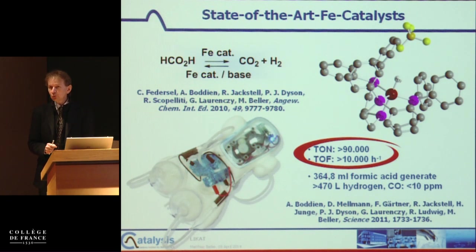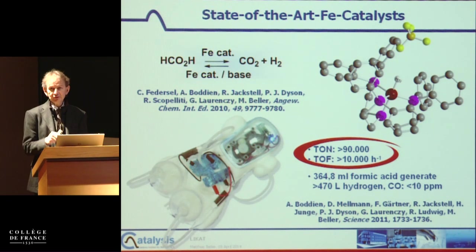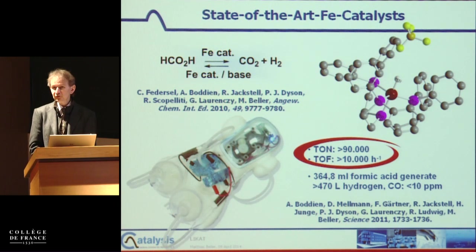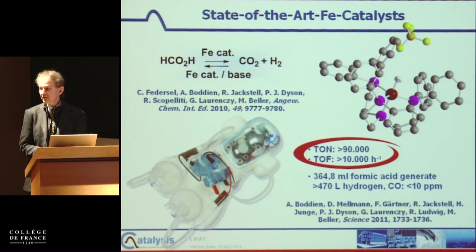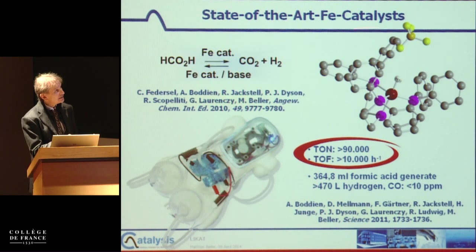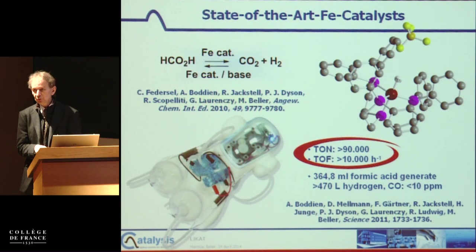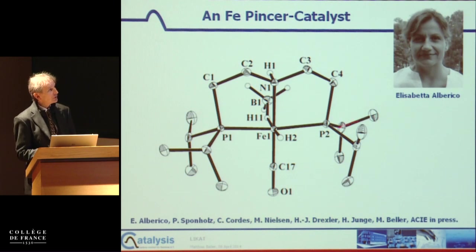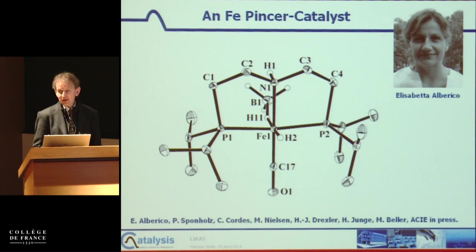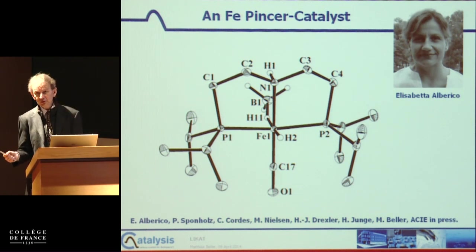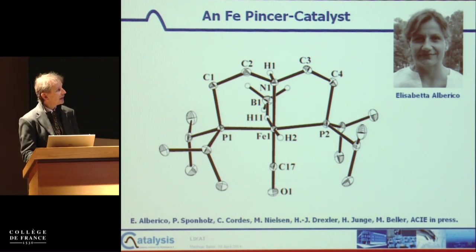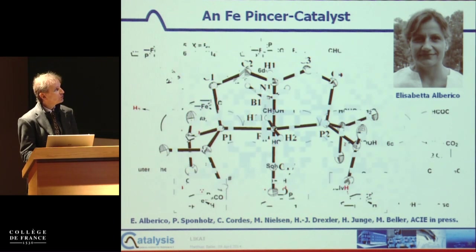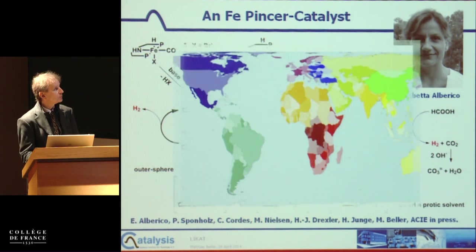But we don't develop only noble metal catalysts. For energy purposes you especially need non-noble metals — iron, copper, zinc, manganese — and we developed the first iron-based systems. This is an iron-pincer complex which allows, with efficiency similar to noble metals, for this type of reaction. Elisabeth Alberico, a visiting scientist from Italy, showed you can make iron complexes that undergo carbon dioxide hydrogenation but also dehydrogenation of methanol — we believe the mechanism is similar.